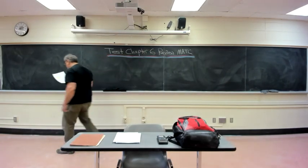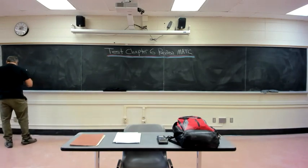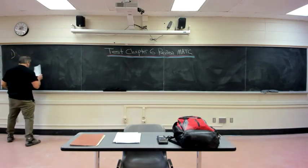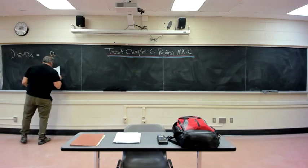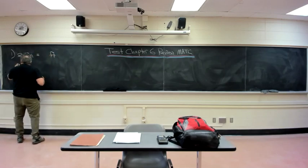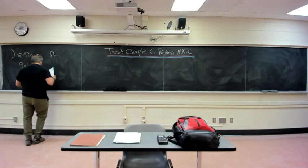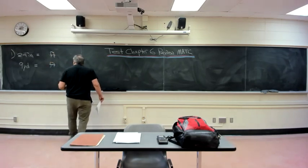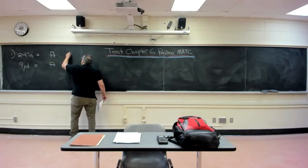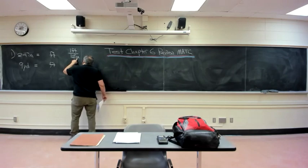There are ten questions, question one of ten, fill in the blanks. For question one, they want you to convert 24 inches into feet. The conversion factor is: every foot is 12 inches. Always put on the bottom the units from which you want to convert, and put on top the units that you want to get to.